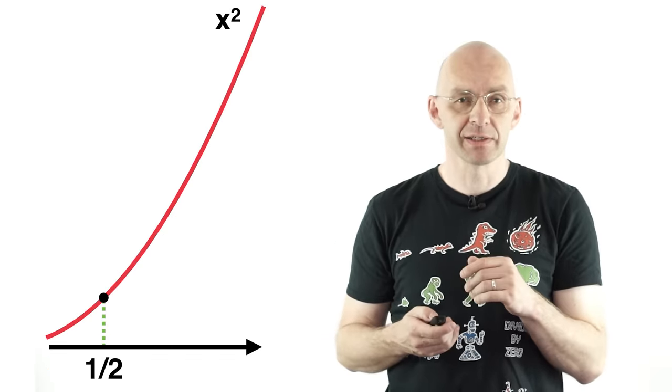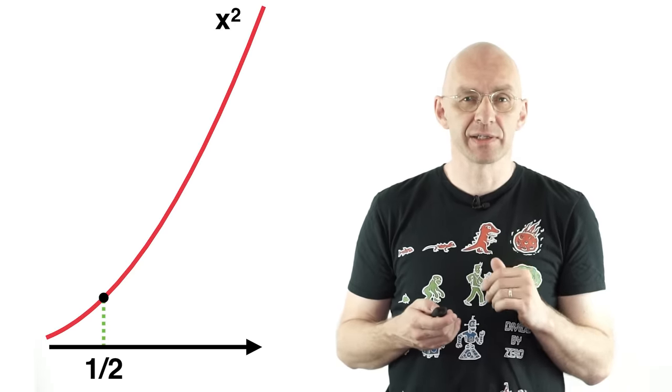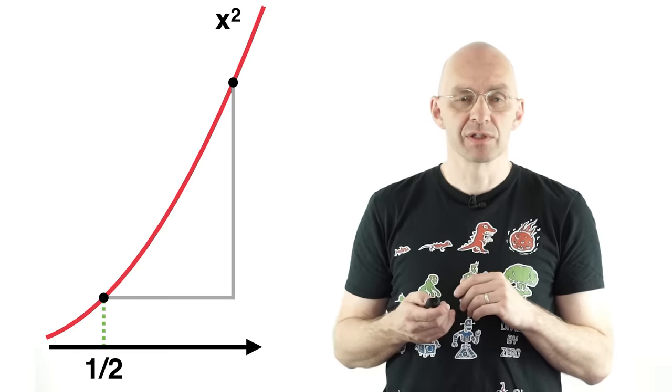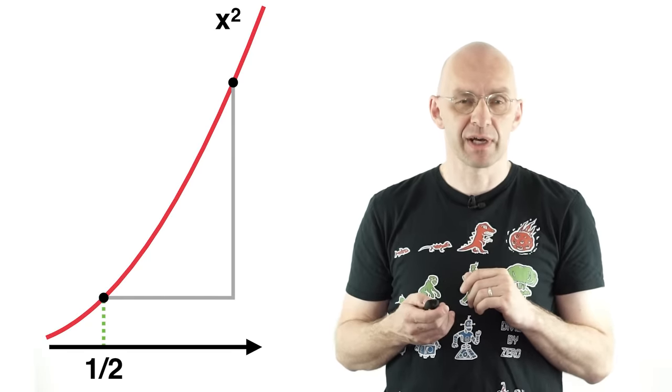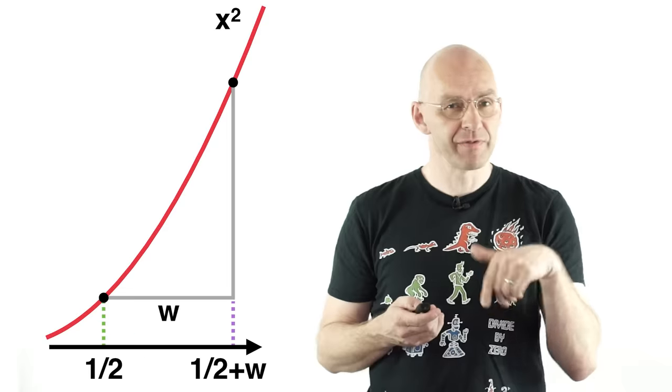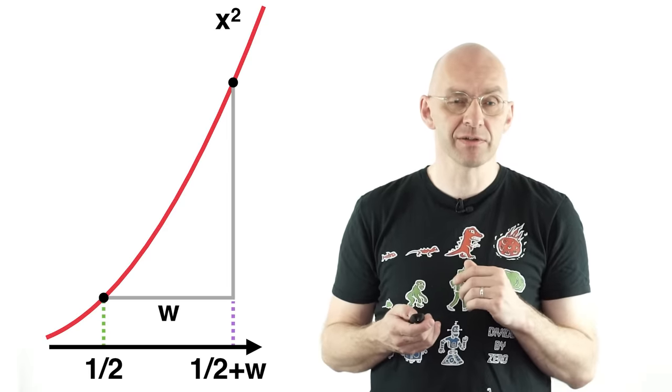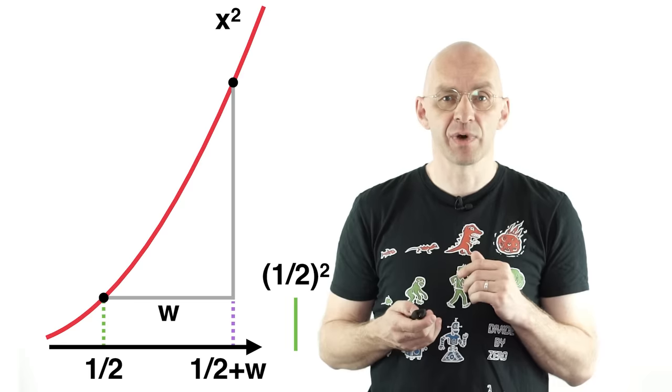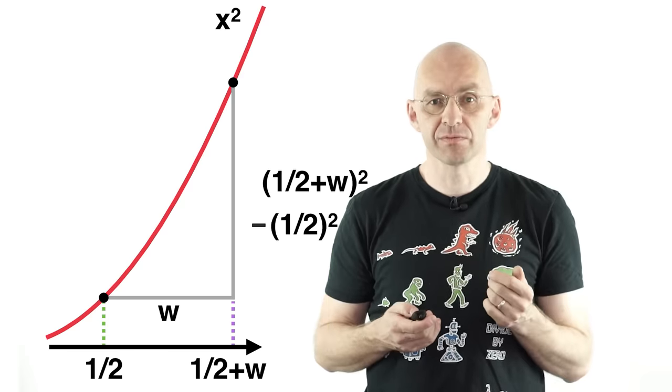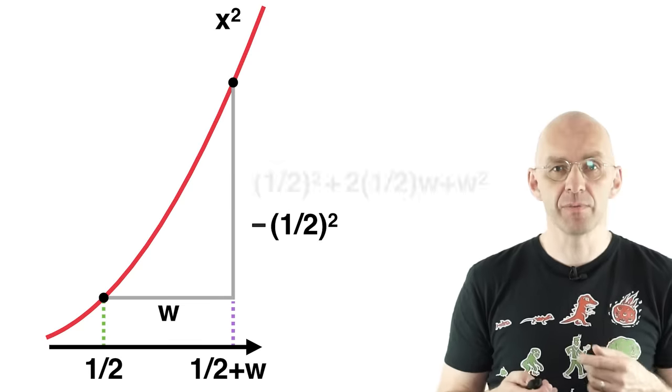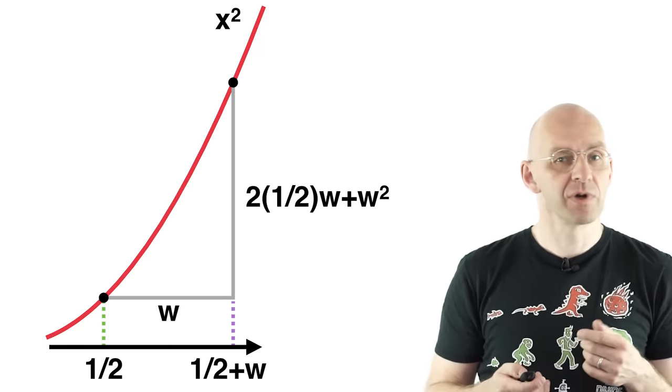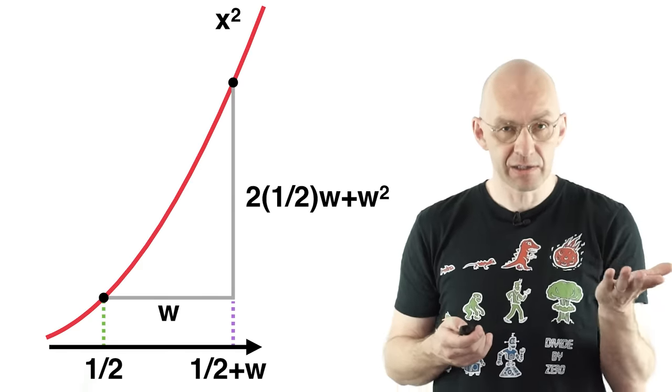Let's just calculate the derivative of x squared at half. Alright so we have to see what's the width here and what's the height. Width we call it w so it gives us a second value. Now we evaluate the function at these two values. So it gives us half squared and one half plus w squared. Now height is of course the difference between the two. So that one here. Expand the top. Notice that these two things cancel out. And you've got the height. And with the height we've got the slope.